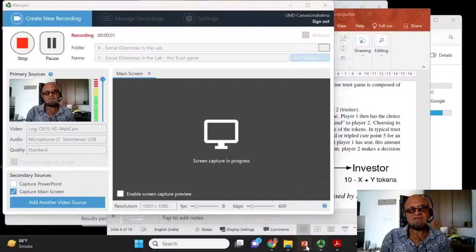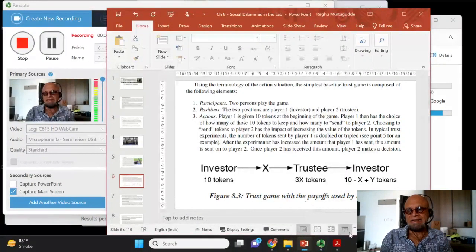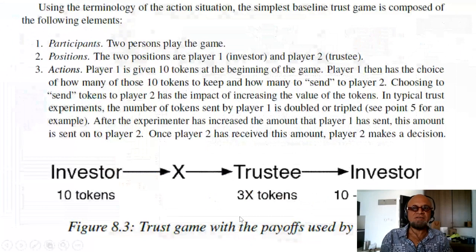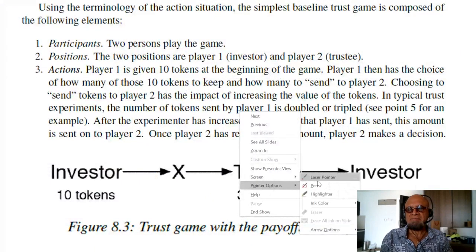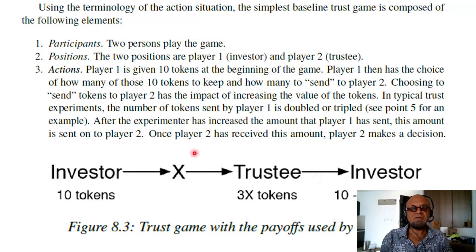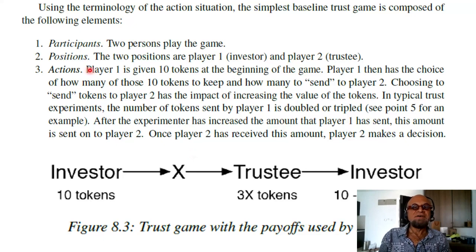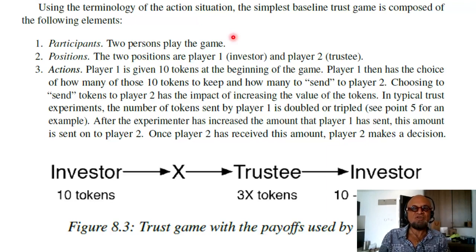Let's look at the first game, a social dilemma game in the lab. It will be the trust game that we already talked about, but in a slightly different situation than the falling-backward example. Using the terminology of the action situation, the simplest baseline trust game is composed of the following elements. We have to always know these to understand the game and measure human behavior in this action arena.